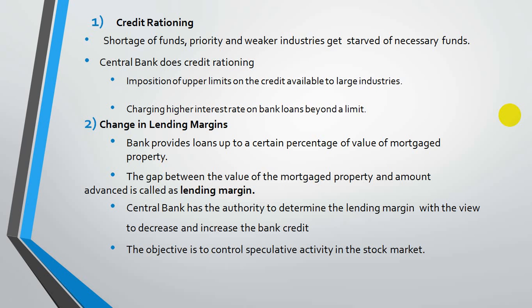The central bank does credit rationing by imposing upper limits on credit available to large industries, deciding which industries can get funds from the bank, and charging higher interest rates on loans provided beyond a particular limit. When both measures are applied, the total credit is reduced.